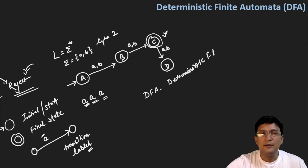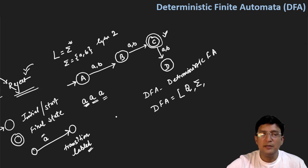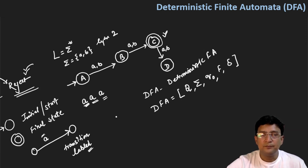Deterministic finite automata is defined by a five-tuple: Q (set of all states), Σ (alphabet set), Q0 (start state), F (set of final states), and δ (transition function).